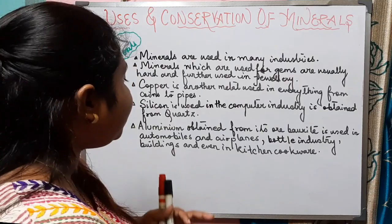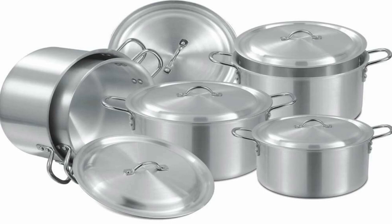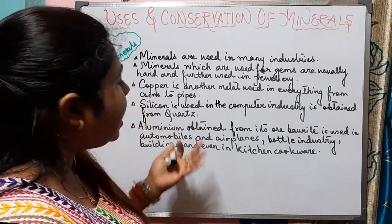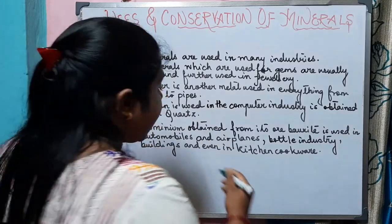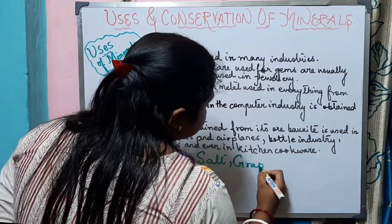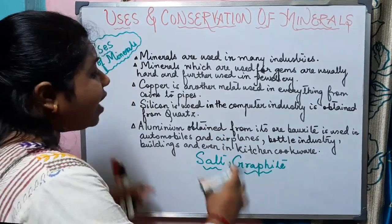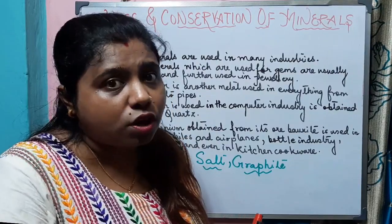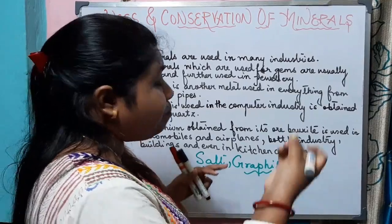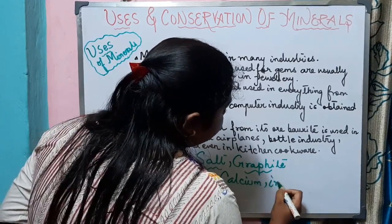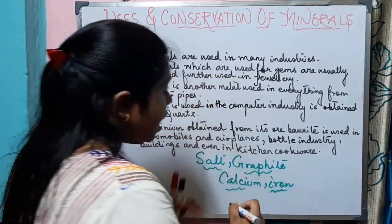The vessels that our mothers use to cook are made up of aluminium, so aluminium plays a very important role in our daily life — in kitchen cookware, buildings, automobiles, and everywhere. Other minerals like salt, which adds flavor to our food, and graphite are very important minerals we use in day-to-day needs. Graphite is used in pencils. We also consume calcium and iron, which are very important for the growth of our body — these are also minerals.